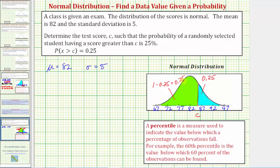So this is the probability that we must enter on the TI-84 in order to determine the value of c. And it should make sense that if there's a 25 percent chance of scoring above c, there would be a 75 percent chance of scoring below c.